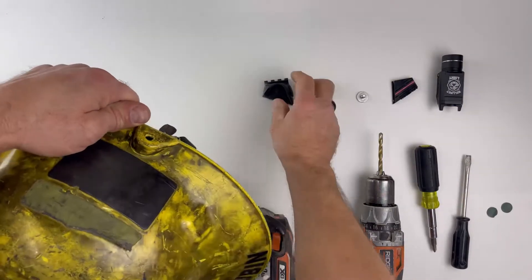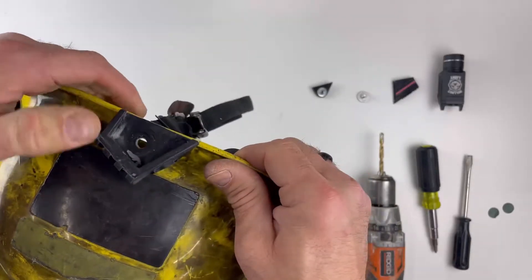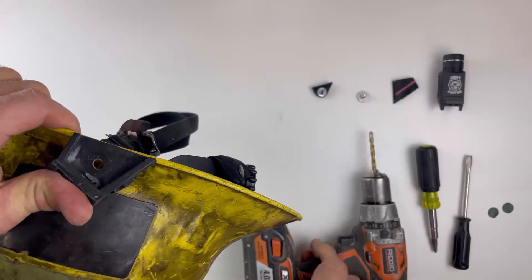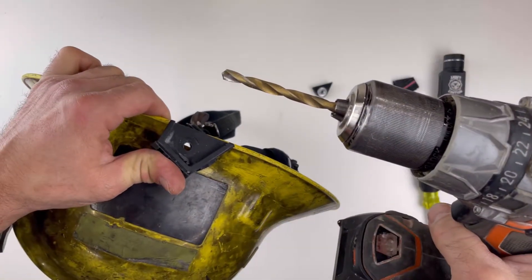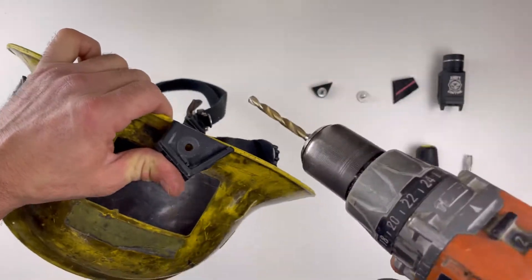Take your helmet. Press the mount really hard against it. Take one quarter of an inch drill bit. Drill it right through.